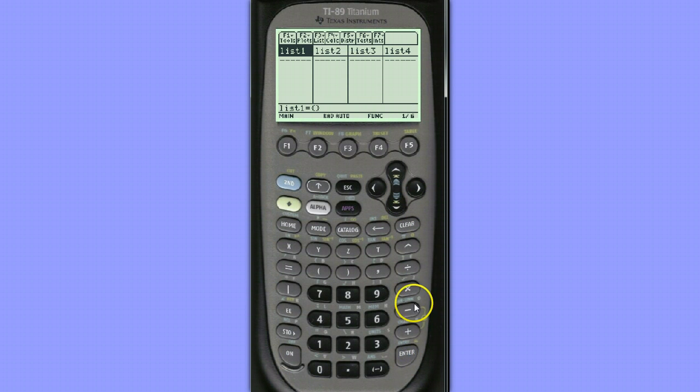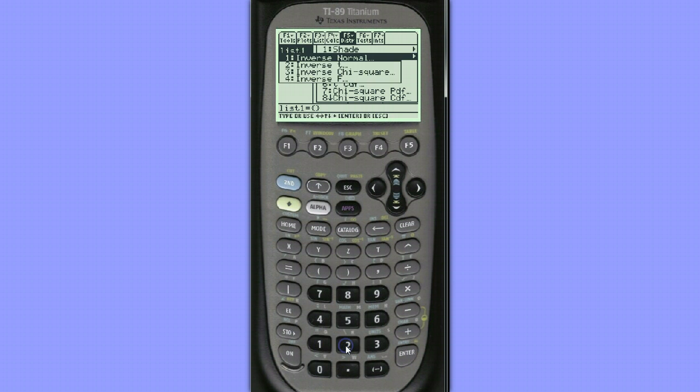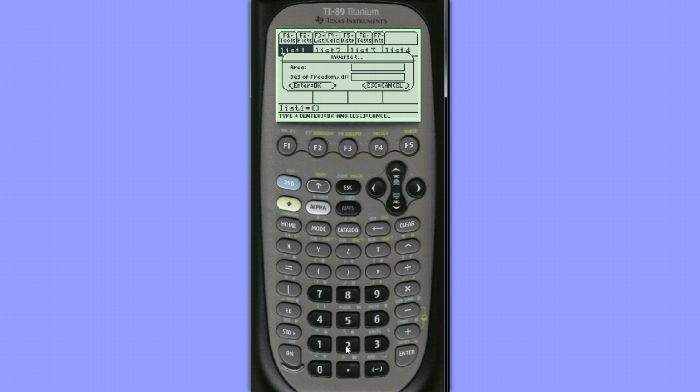Choose option 5, F5, for distributions. Choose option 2 for inverse, and then choose inverse T. Notice we have a template to fill in for area and degrees of freedom.